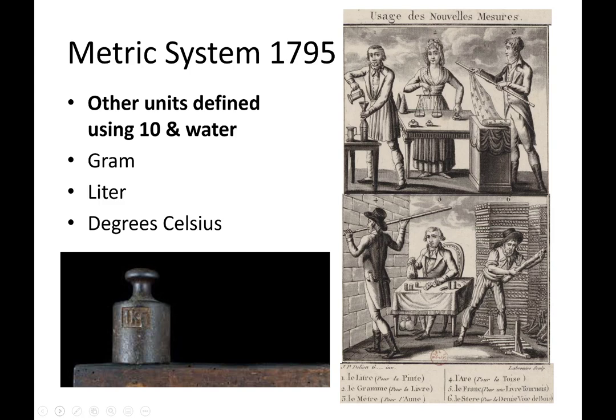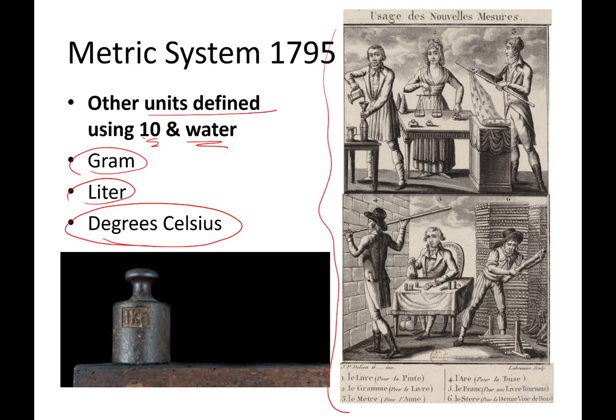So they based the metric system on ten to make it a decimal system, sort of like we can convert in money, and based on the most common substance on the surface of the Earth, water. All other units were defined and created using the number ten and water, and they defined the gram, the liter, and the degree Celsius. And I found this picture of this old poster from 200 years ago trying to inform the average French citizen, after the creation of the metric system, how to actually use and apply this new system of measurements. So I thought that was pretty nifty. That was an educational poster of the time.